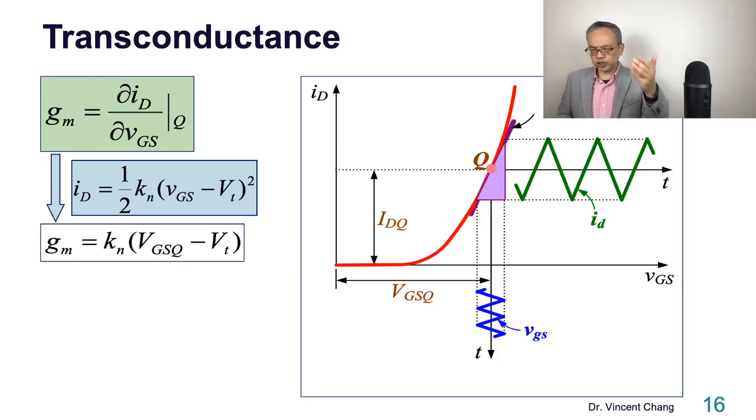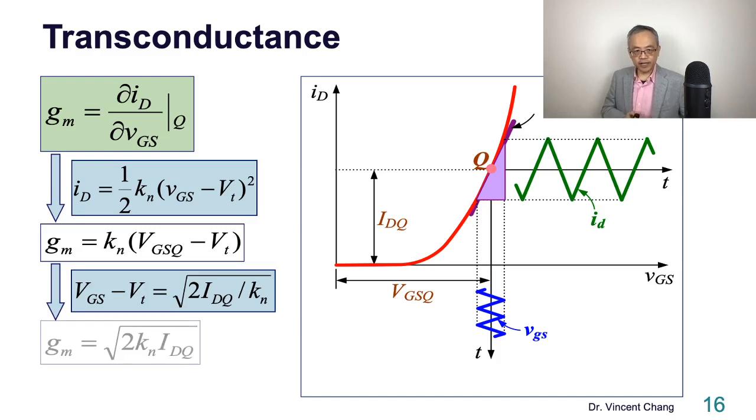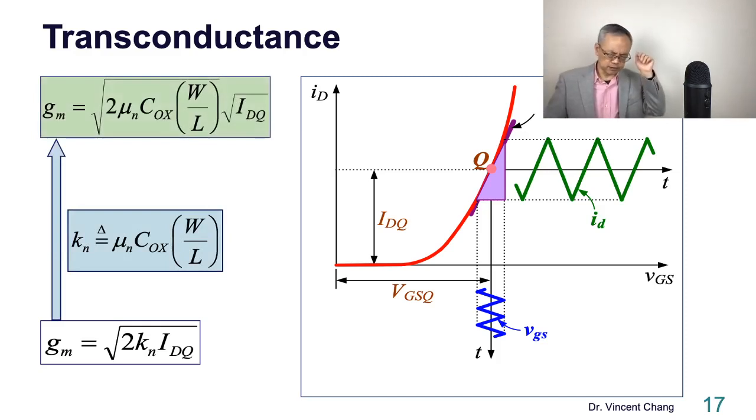This is the formulation for transconductance, so it's proportional to overdrive, VGS minus VT. But if you want to express GM in terms of bias current, then you can use this. It tells you that the transconductance will be proportional to the square root of the bias current, and square root of the channel width divided by channel length, geometry ratio.